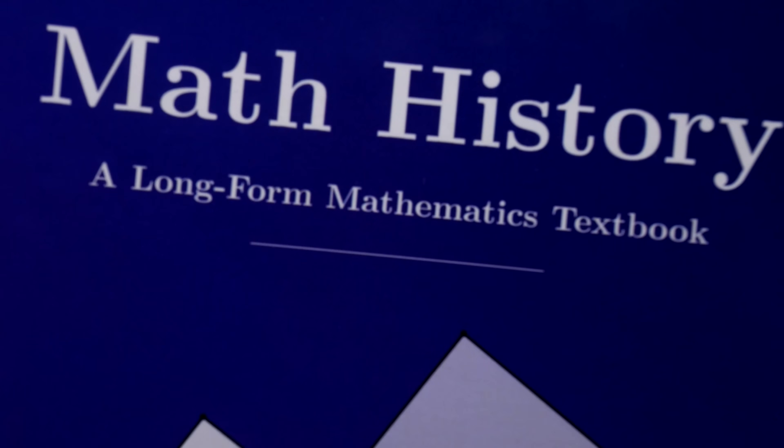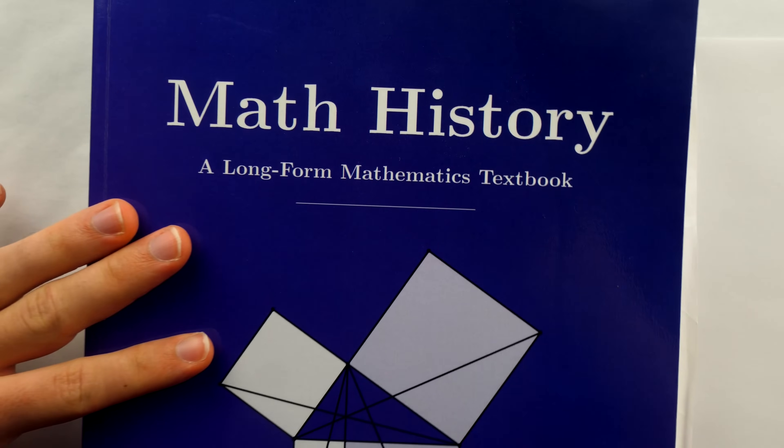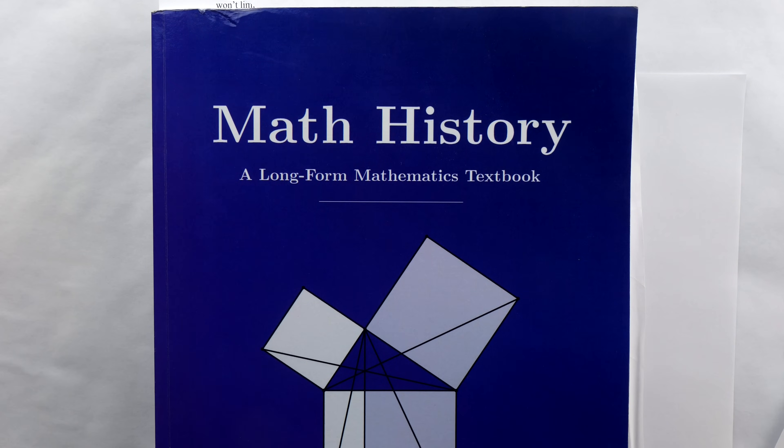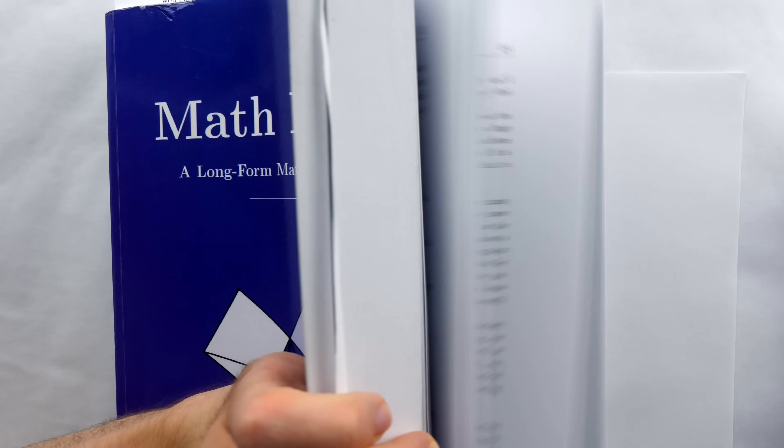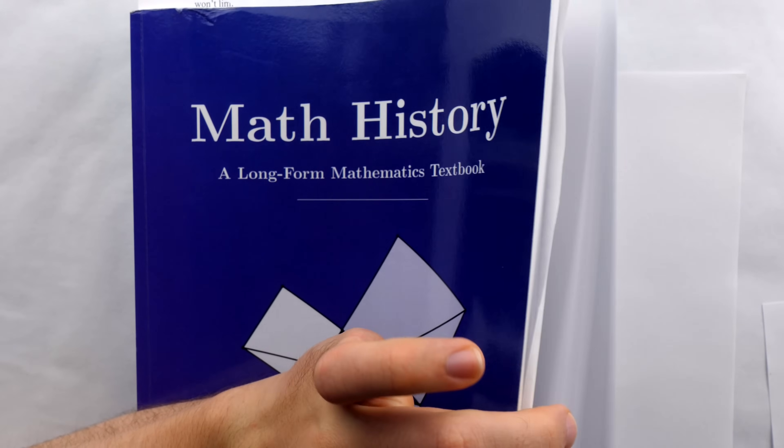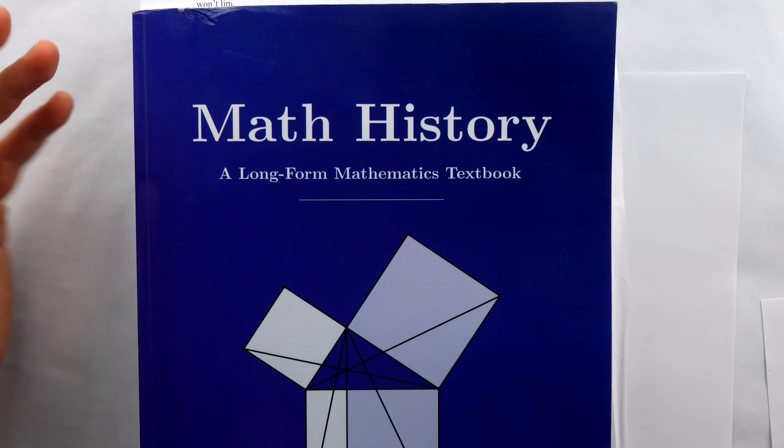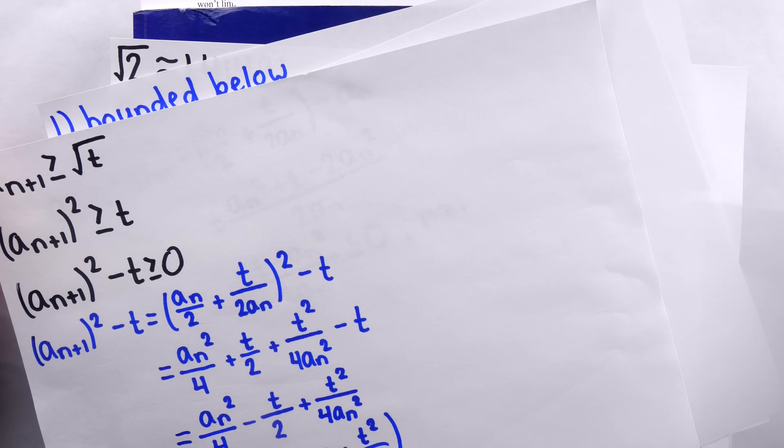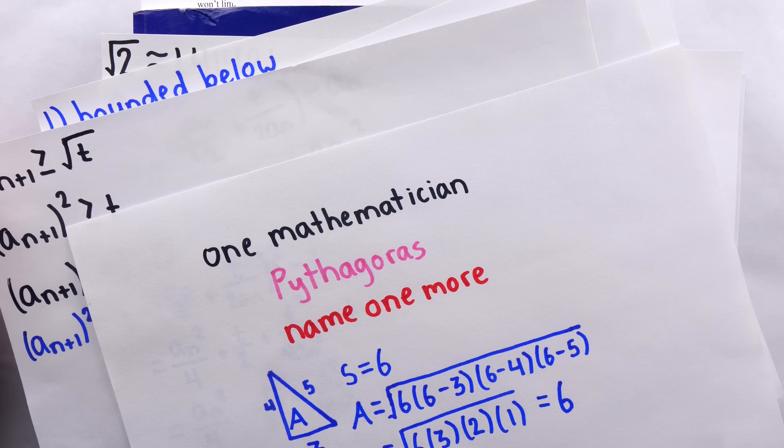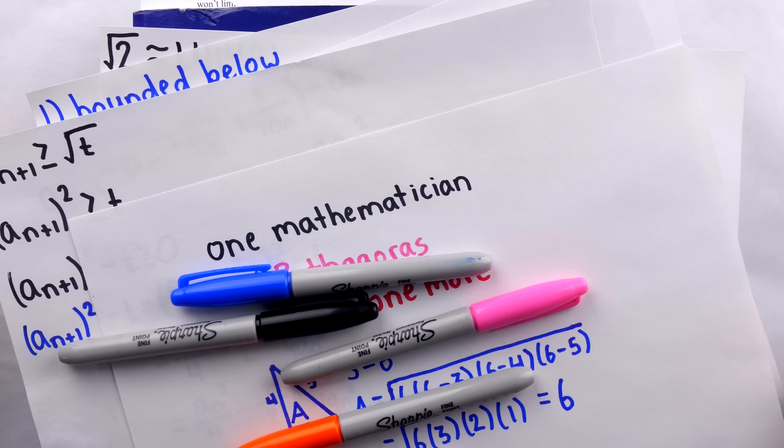So, I'll leave a link in the description if you want to pick up this incredible new book by Jay Cummings. Check it out on Amazon. It's really awesome. It's only like 30 bucks. Must buy, must read, in my opinion. Let me know in the comments if you had any questions, and be sure to subscribe for more of the swankiest math videos on the internet.